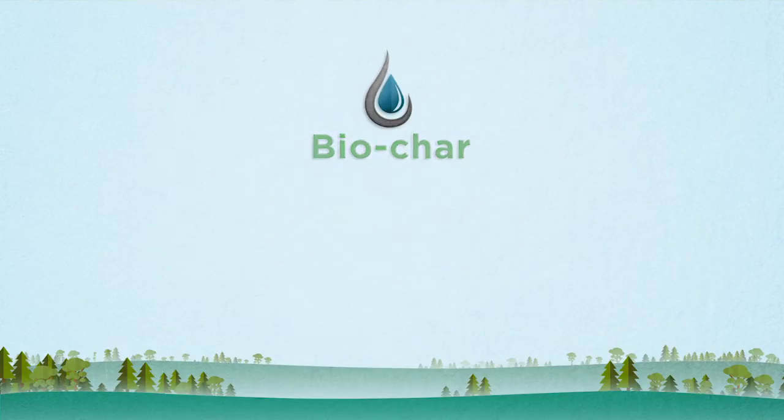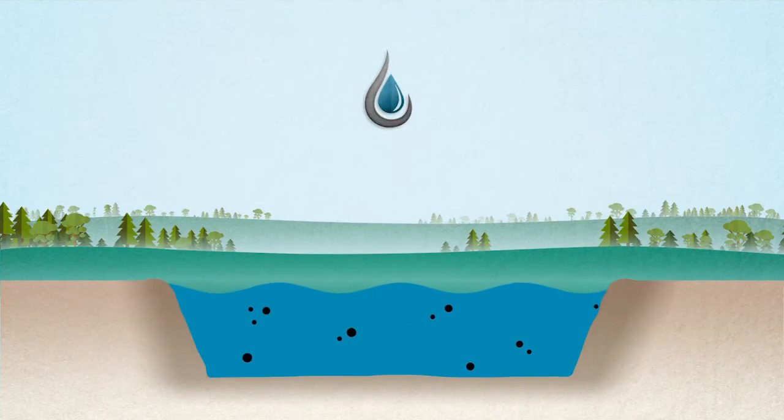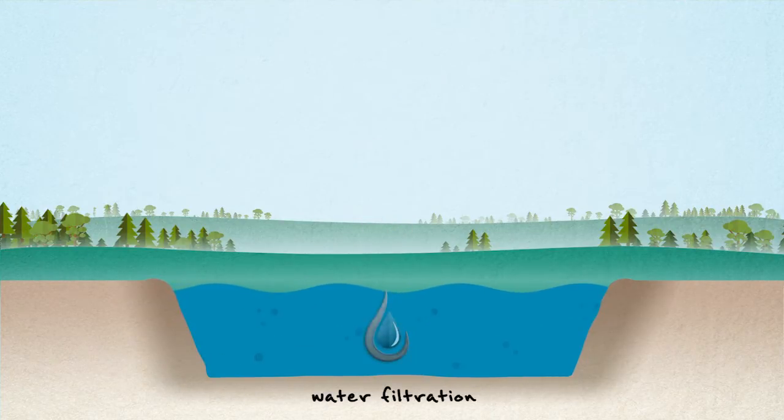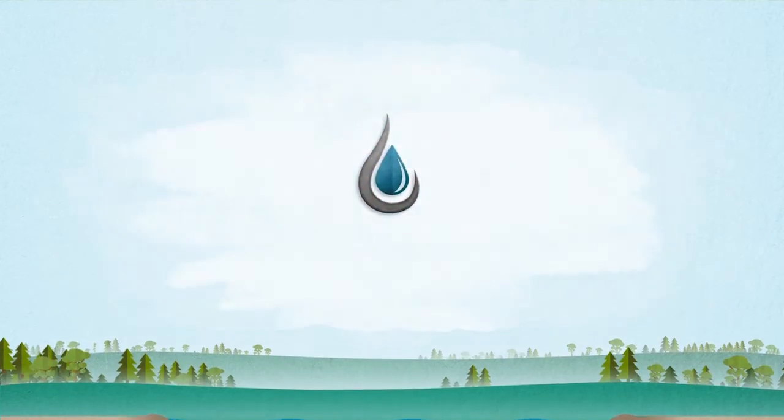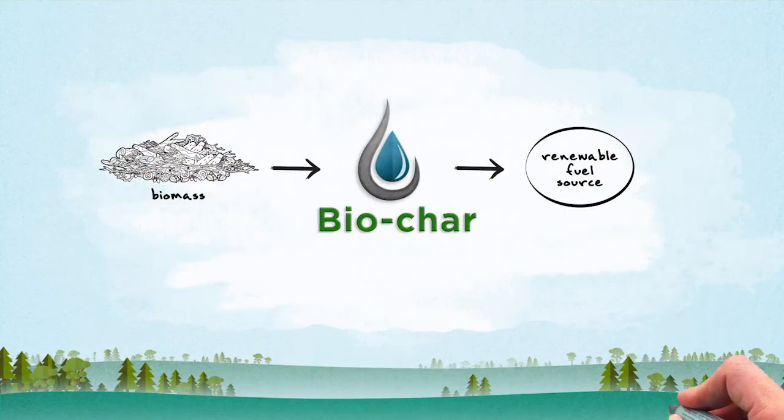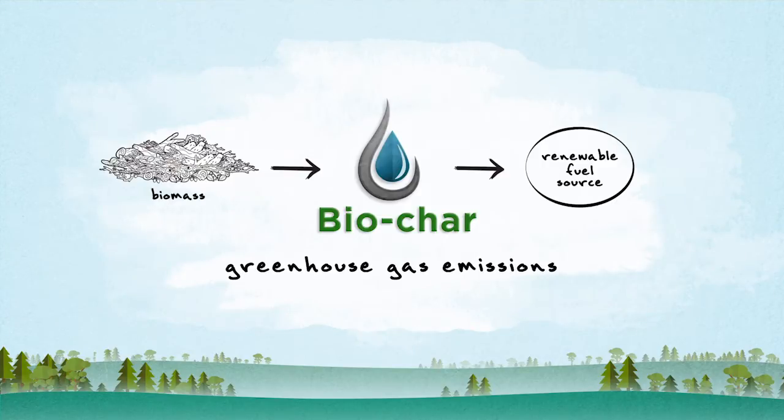Biochar is a safe and reliable biomass-based product that could greatly improve water filtration processes in Canada's oil sands. Later on, that same biomass can even be used as a clean and renewable fuel source to further reduce greenhouse gas emissions.